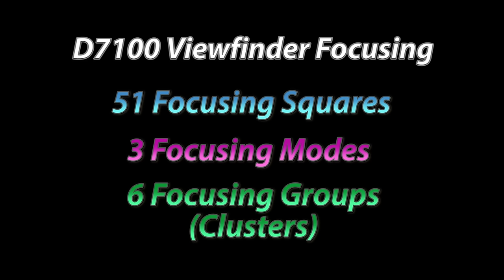This lesson on our camera's focusing systems is critical. Something that a lot of beginning and intermediate photographers will struggle with is the complex way that the camera focuses, in how it does it and where it does it. Our camera has 51 focusing squares, three different focusing modes, and it also has six focusing groups, which I also refer to as clusters.